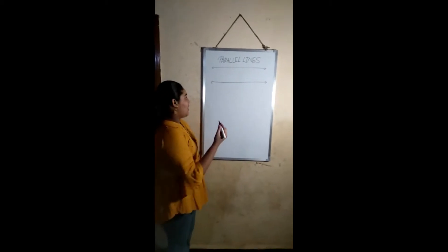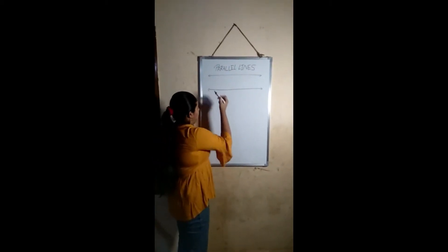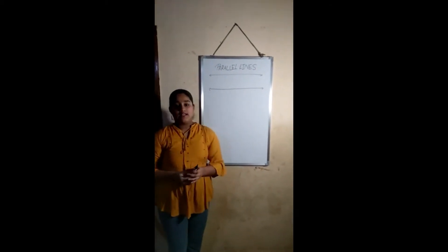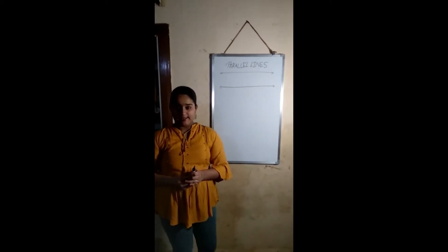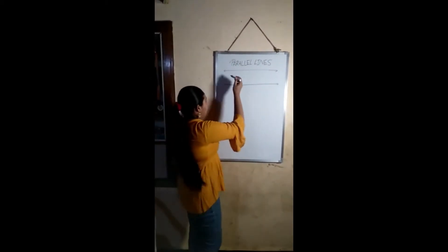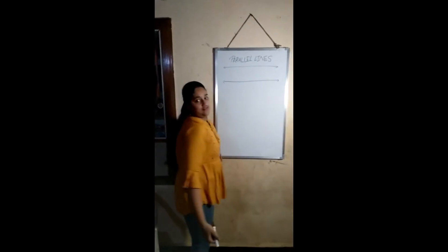Now let me tell you about parallel lines. Parallel lines are the lines which do not meet at any point. The distance between them is equal.